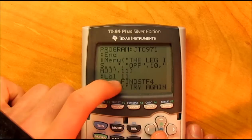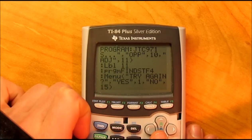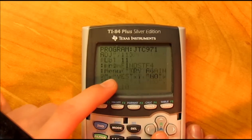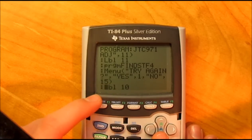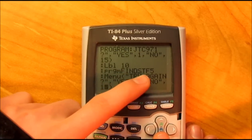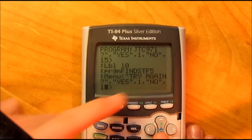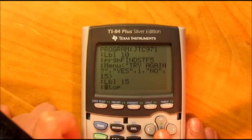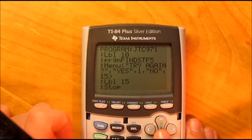If it's adjacent, that's label 11, program find STF 4, menu try again, yes, no. Label 10, program find STF 5, and then menu try again, yes, no. Then label 15.